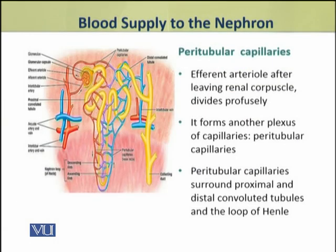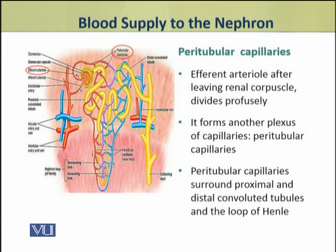The efferent arterioles, after leaving the renal corpuscle, divide profusely and form another plexus of capillaries called peritubular capillaries. These peritubular capillaries surround the proximal and distal convoluted tubules and the loop of Henle, forming a network of capillaries around the entire renal tubule.